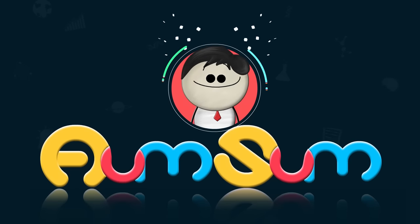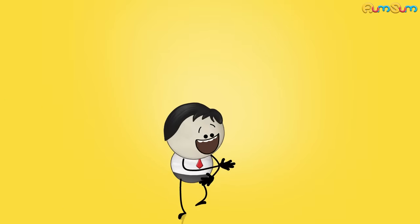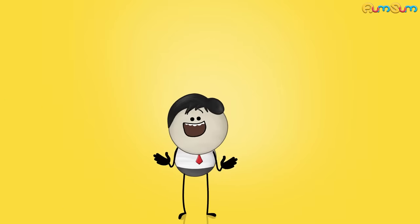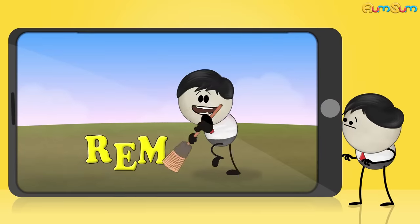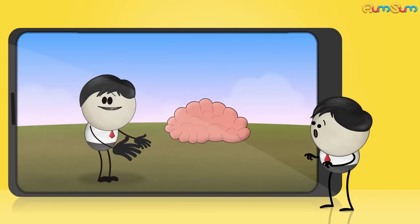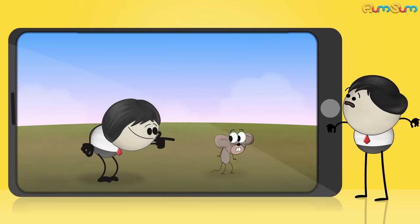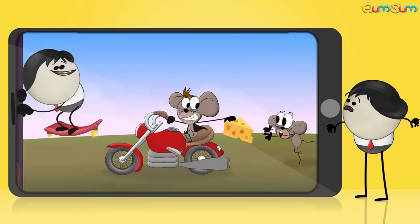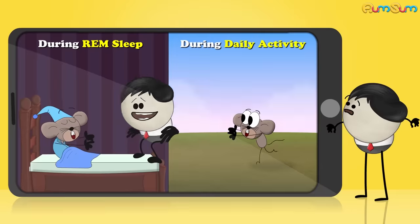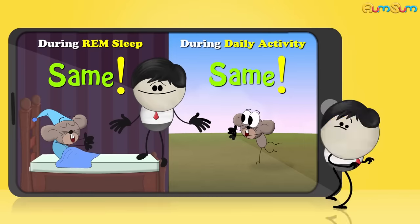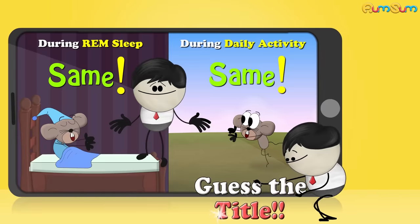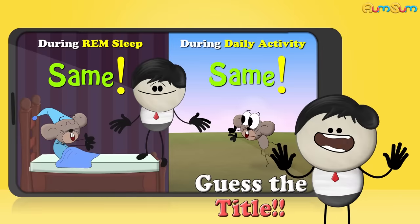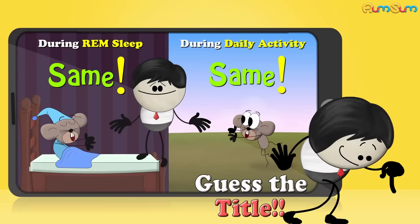It's AumSum Time. Hi guys. Can you guess the title of my next video? In a research, the brain activity pattern of a rat running for some cheese and the one during its REM sleep was found to be similar. Hurry up. Write your guess in the comment section below.